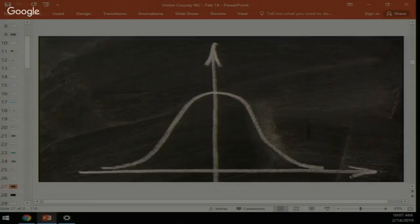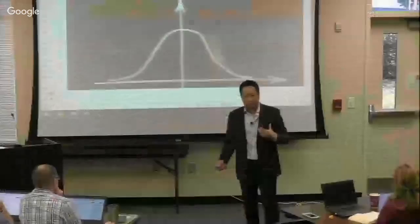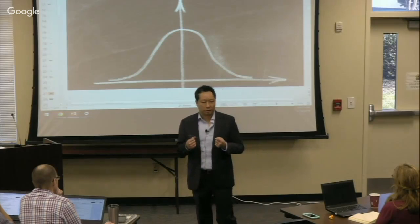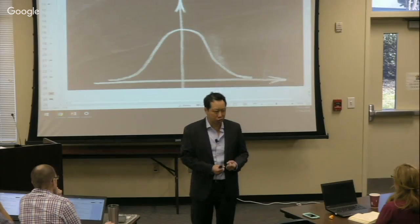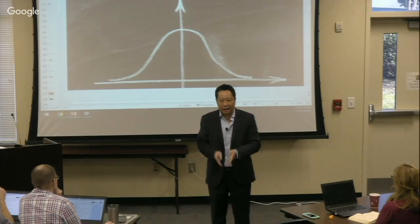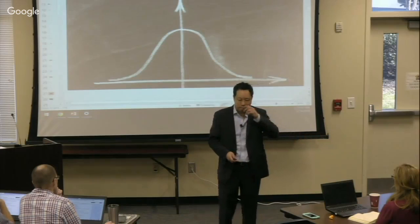One frequently asked question is: how do we know a score of 525 means a student is at a particular grade level? There are two ways to determine grade level — through a norm or through a criterion. A norm-referenced test uses a bell curve: if your score matches the average, you're considered on grade level. I remember taking a university course graded on a curve where an 89 earned a B because the class average was 90.